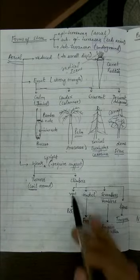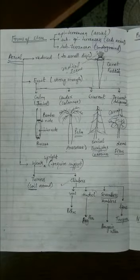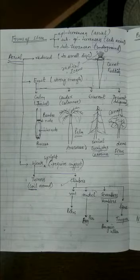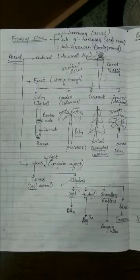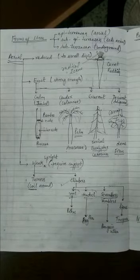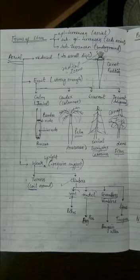Plants in which the weak green stems coil around an external support are called twiners. The second category is climbers. Climbers have weak, flexible stems and climb up a support with the help of different structures. For example, if they develop roots to climb, they are called root climbers. An example of a root climber is Scindapsus, also known as Epipremnum or money plant.